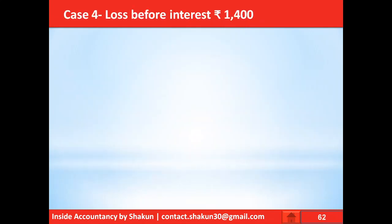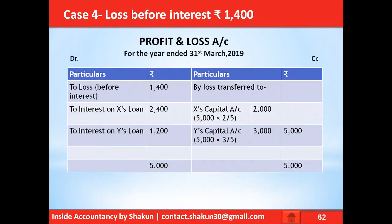In Case 4, there is a loss before interest of 1,400. The loss is shown on the debit side of the profit and loss account. Interest on X and Y's loan continues to be shown on the debit side as a charge, and the total divisible loss of 5,000 is divided between X and Y in the ratio of 2:3.